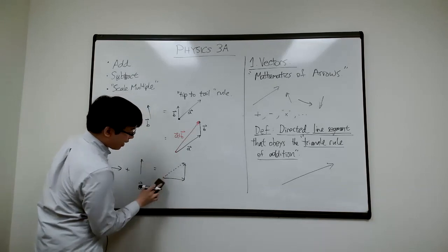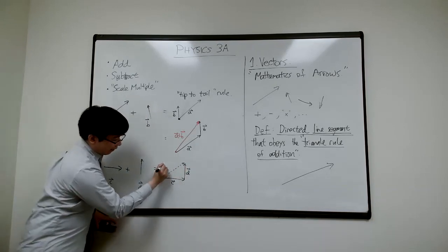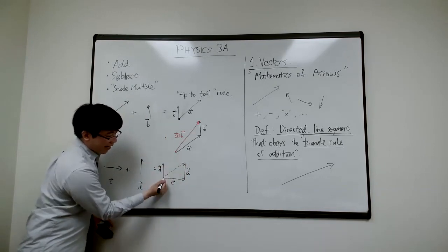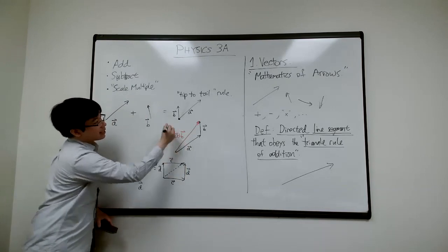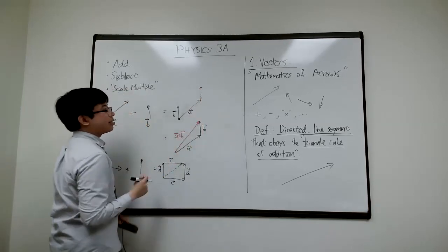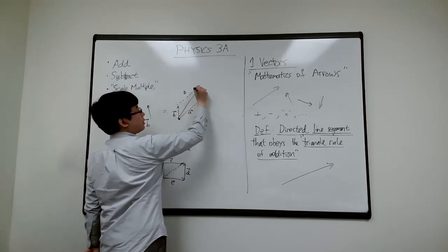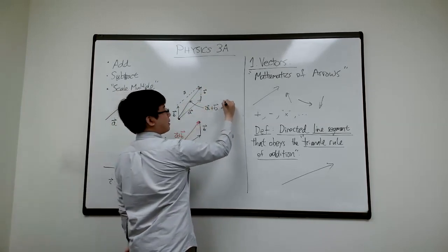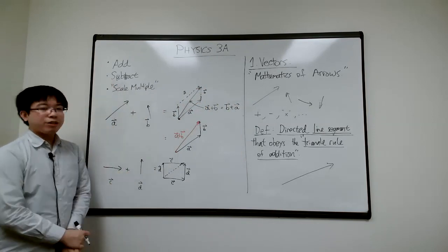Notice that if I do it the other way around — connect C's tail to D's head instead — I get exactly the same answer. I can either move B over to the end of A or move A over to the end of B; the result is the same. That's essentially a statement that A plus B equals B plus A.